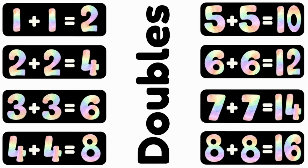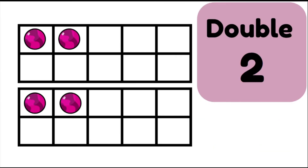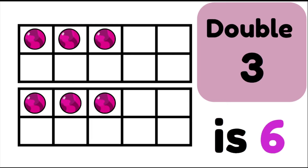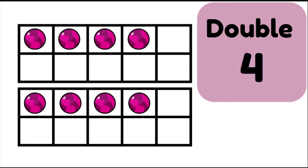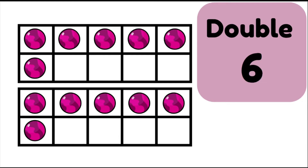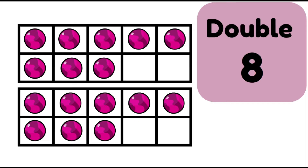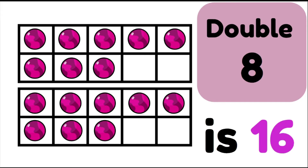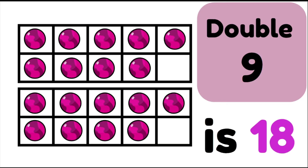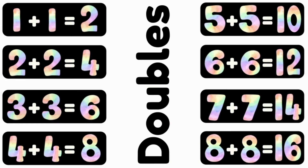Let's quickly go back over our doubles. If I double one I get two, double two is four, double three is six, double four is eight, double five is ten, double six is twelve, double seven is fourteen, double eight is sixteen, double nine is eighteen, and double ten is twenty. See if you can remember these facts for your near doubles.